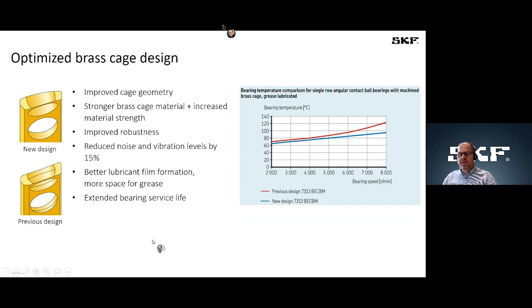What have we done on the cage? On the top you see the new design of the cage and on the bottom the previous design. And you can immediately see that we have improved the geometry itself. So this leads to better lubrication film formation between the ball and the cage itself. You have more space for the grease as this cross section is smaller of this new cage. And due to this better lubrication film formation, you have reduced temperatures, reduced noise and vibrations. On this graph you can see very nice the previous design in red and the lower temperature of the new bearings with the new brass cage. And all of these puzzle stones lead to an extended bearing service life at the end.